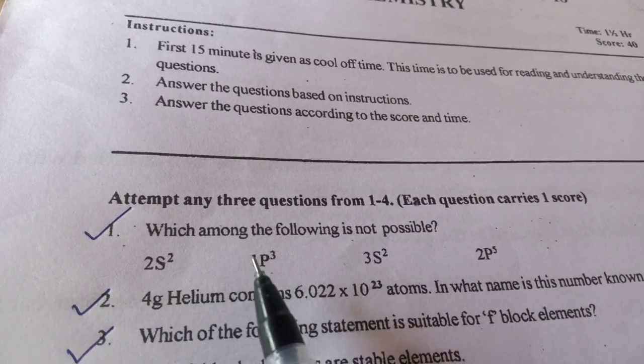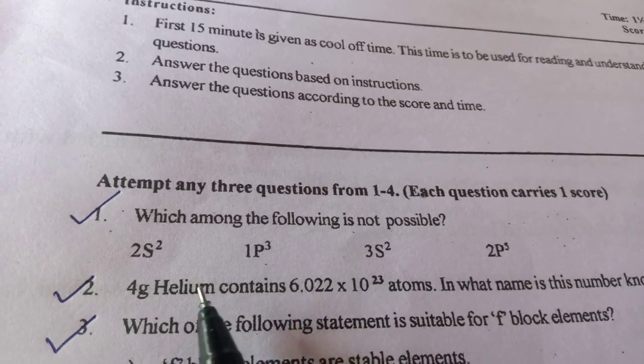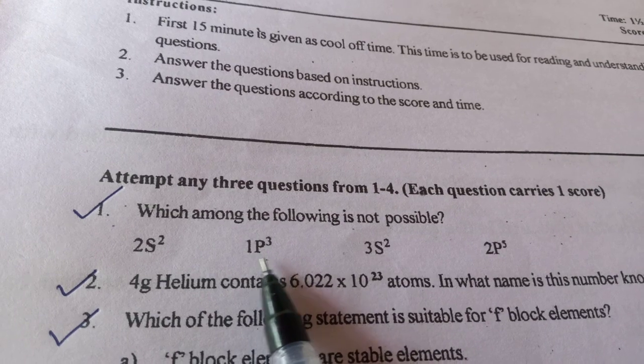2s2, 1p3, 3s2, 2p3. In this, all these are possible except 1p3, it is not possible.